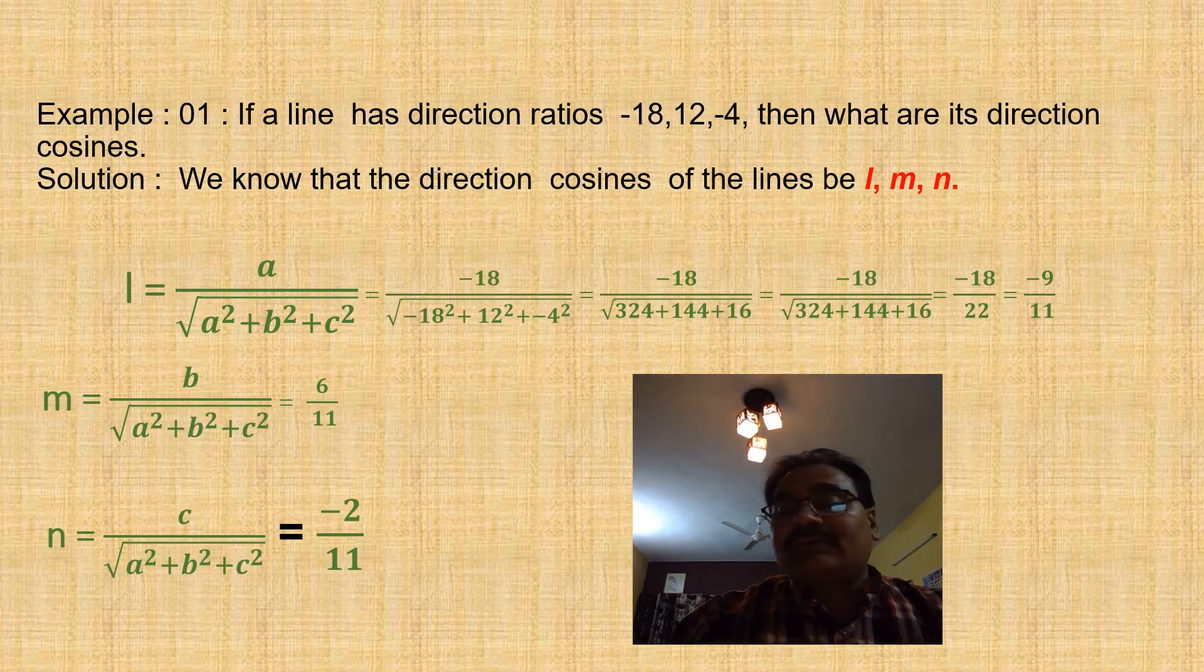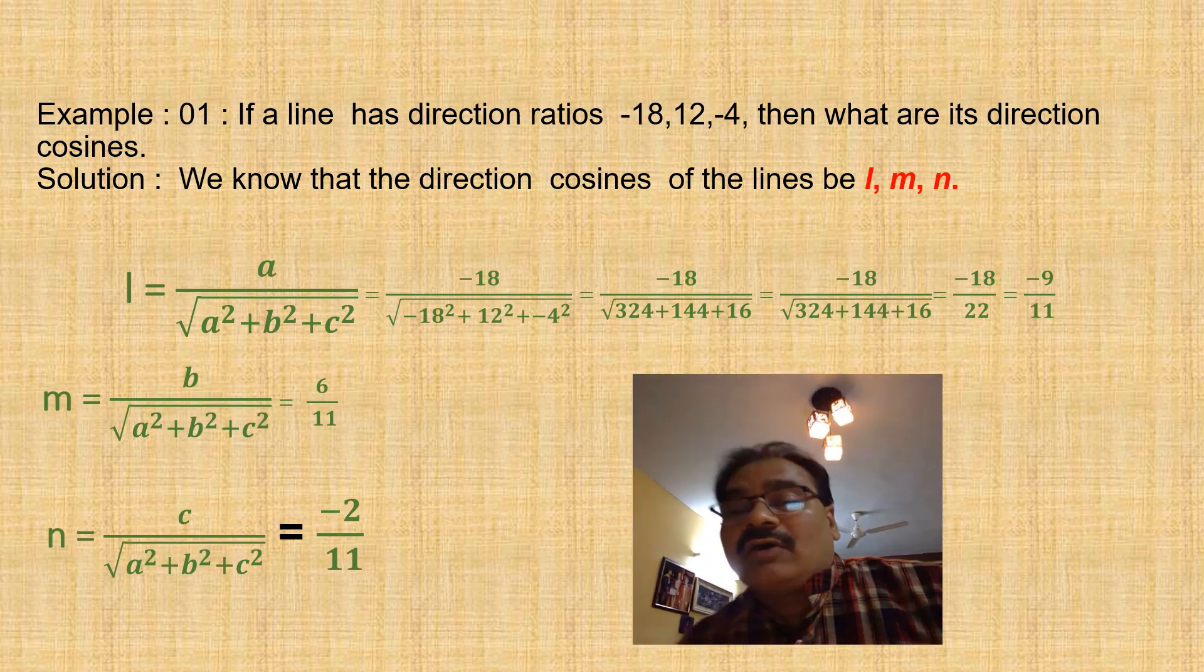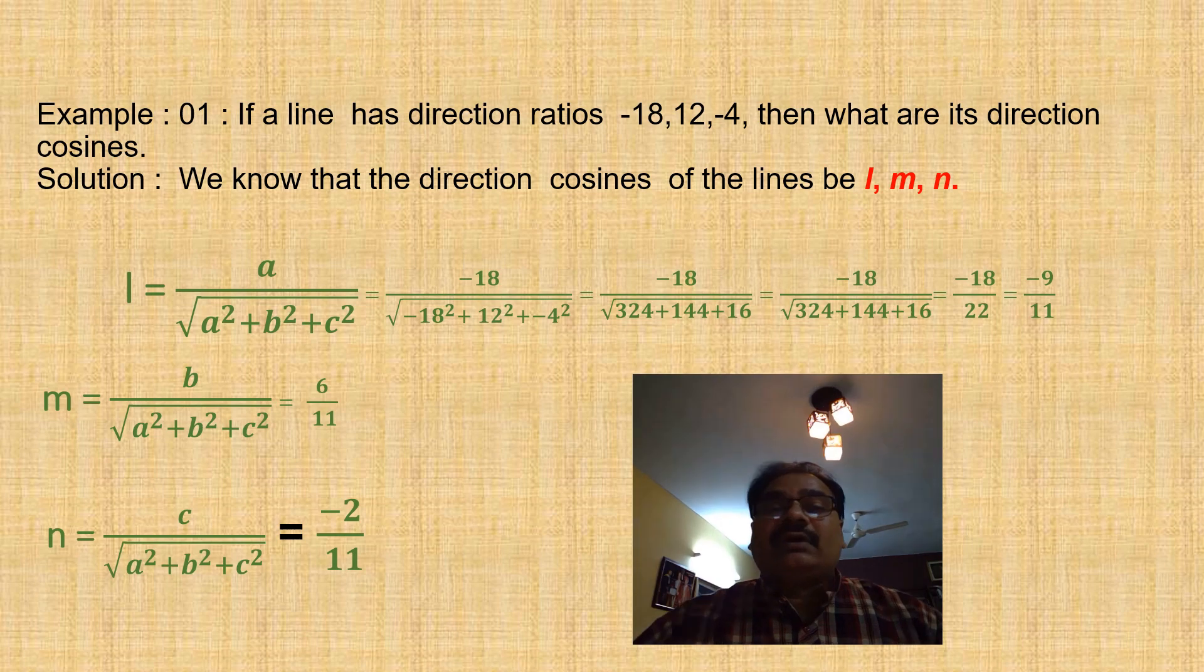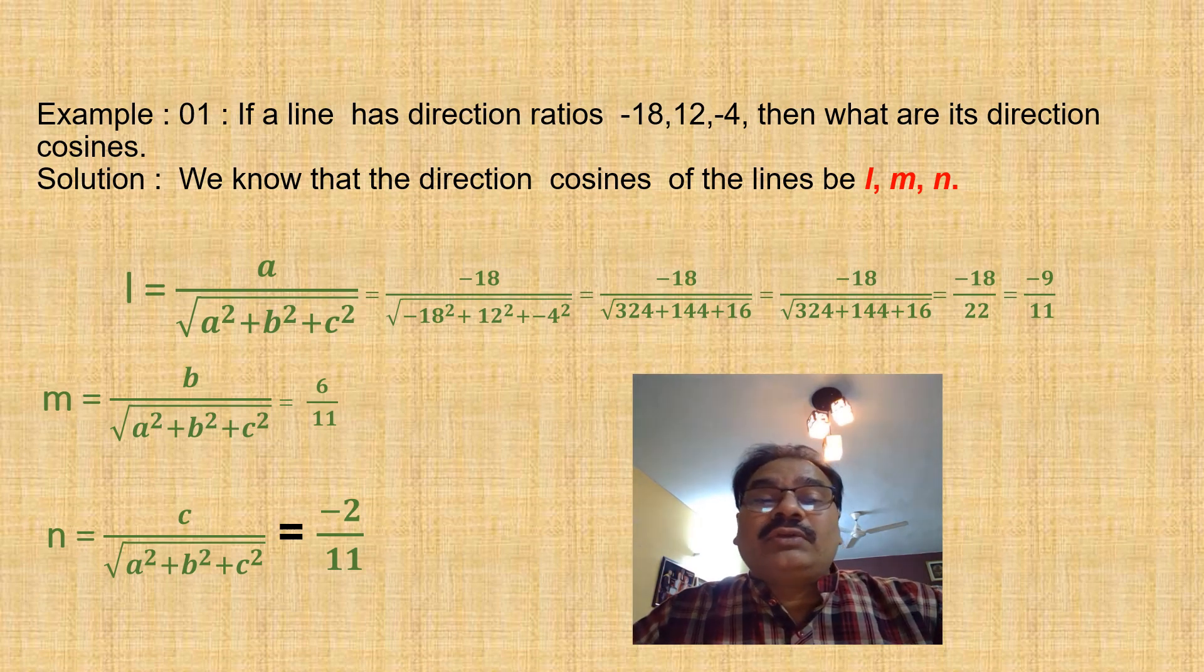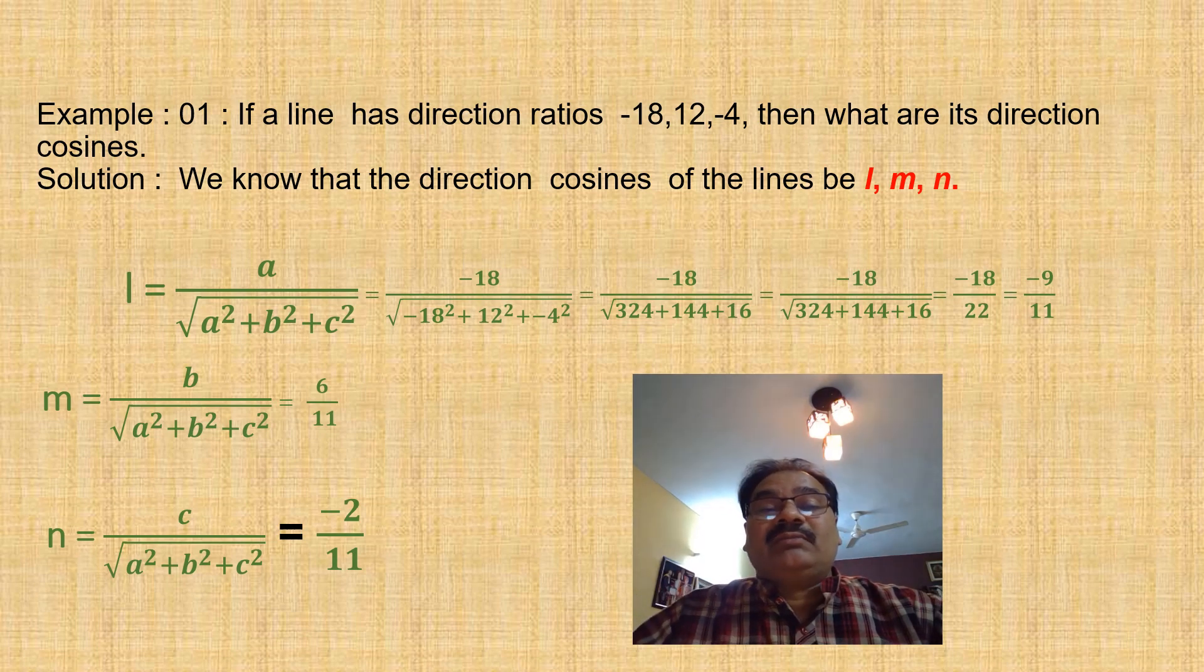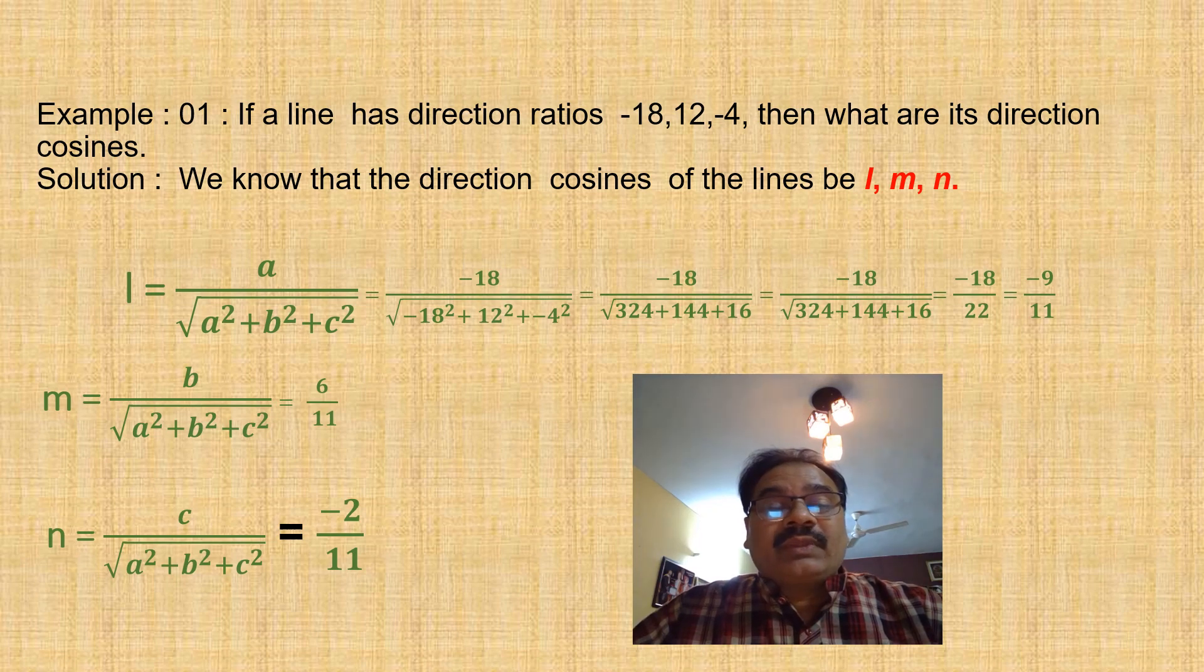We have already seen the formula: l = a/√(a² + b² + c²). If you put the values, this is -18/√((-18)² + 12² + (-4)²). The square root of this term is 22. So l = -18/22 = -9/11.